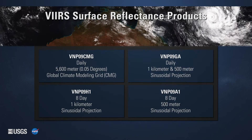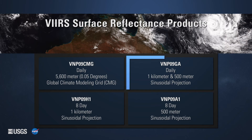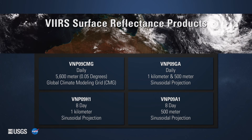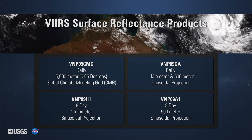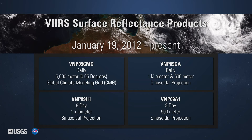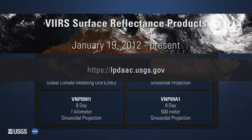The daily surface reflectance products are available as a 0.05 degree, or 5,600 meter, global climate modeling grid or CMG, and as a 1 kilometer or 500 meter tiled product in sinusoidal projection based on the MODIS sphere. The 8-day surface reflectance products are available as 1 kilometer and 500 meter tiled products, also in sinusoidal projection. Data products are available from January 19, 2012 to present. Detailed information about each product can be found on the LP DAAC website at lpdaac.usgs.gov.